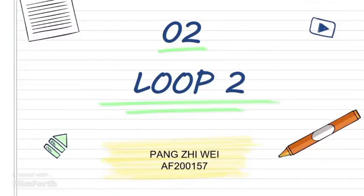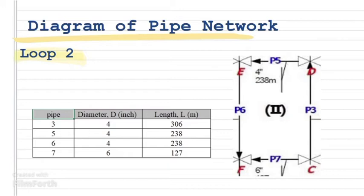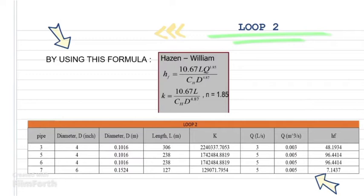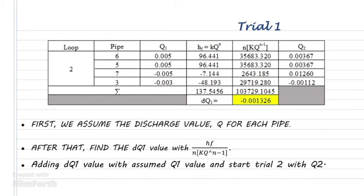Hi, my name is Pang Ziwei and my matric number is AF200157. I'm going to present the pipe network analysis for loop 2. There are four pipes included in loop 2, which are pipe 3, 5, 6, and 7. The diameter and length are given from the task. Diameter is in inches and length is in meters. First we convert the diameter from inch to meter. And by using the Hazen-William method, we can find hf and k value for every pipe. After finding hf and k value, we assume the discharge value Q for each pipe. After that, find the dQ1 value with the formula hf divided by n times k times Q to the power of n minus 1. And we add dQ1 value with assumed Q1 value and start trial 2 with Q2.